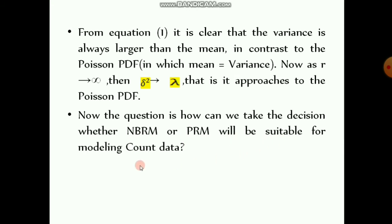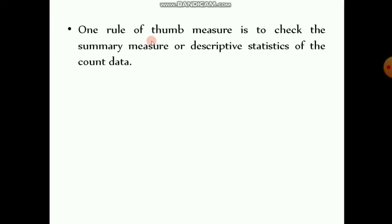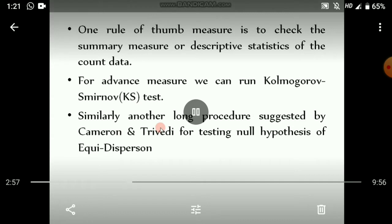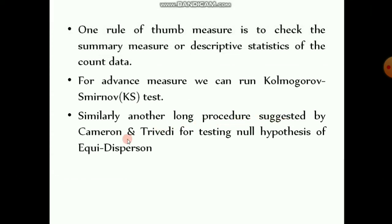The question is: how can we decide whether the negative binomial regression model or the Poisson regression model is suitable for modeling count data? One rule of thumb is to check the summary or descriptive statistics of the count data. For a more advanced measure, we can run the Kolmogorov-Smirnov (KS) test. Another procedure suggested by Cameron and Trivedi tests the null hypothesis of equidispersion; this is not analyzed in detail here, but you can refer to the book 'Essentials of Econometrics.'